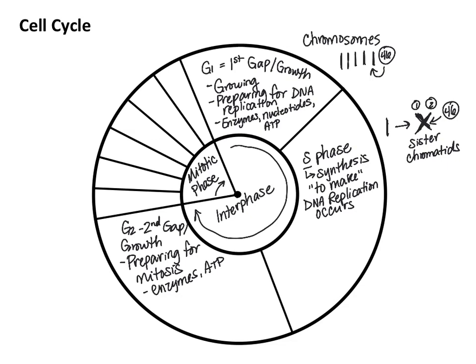That then takes us into the mitotic phase. During the mitotic phase, remember we've got our PP-MAT-C: prophase, followed by prometaphase, followed by metaphase, then anaphase, telophase, and cytokinesis.